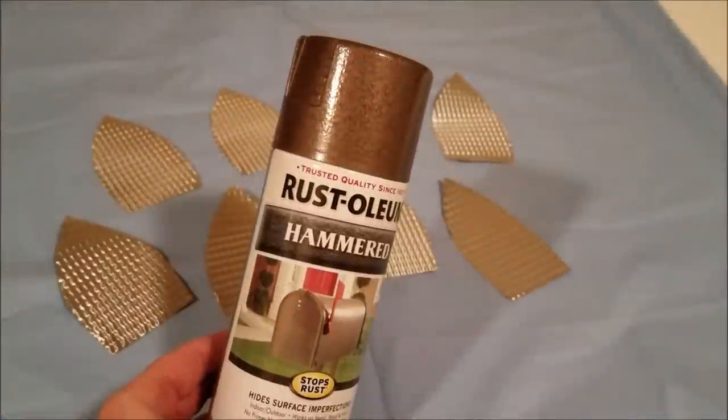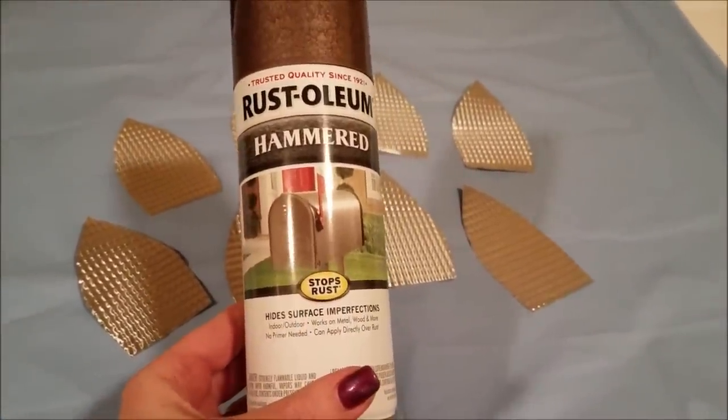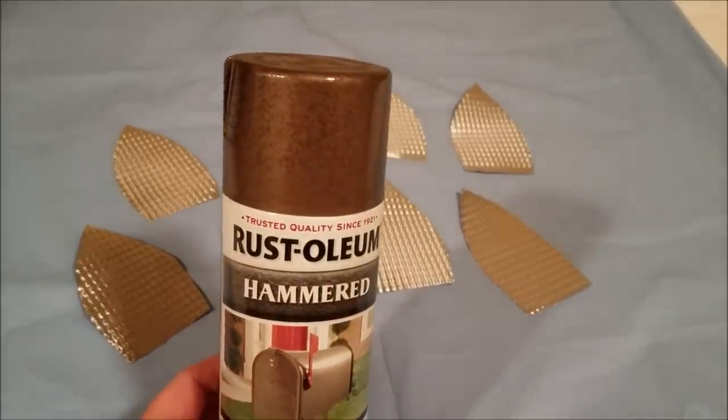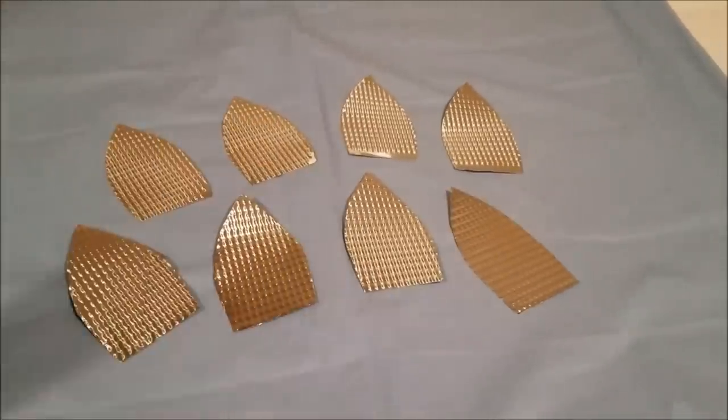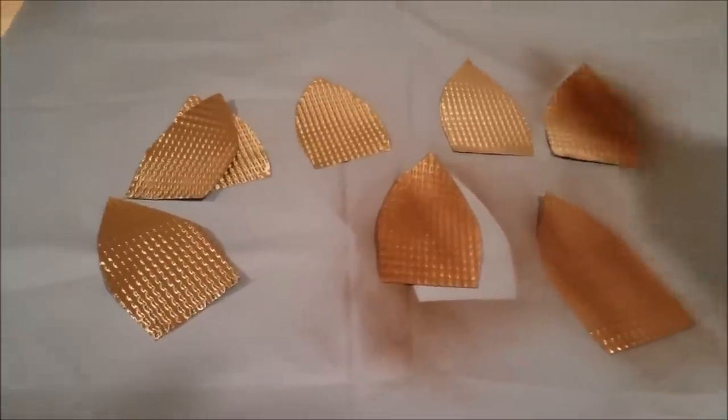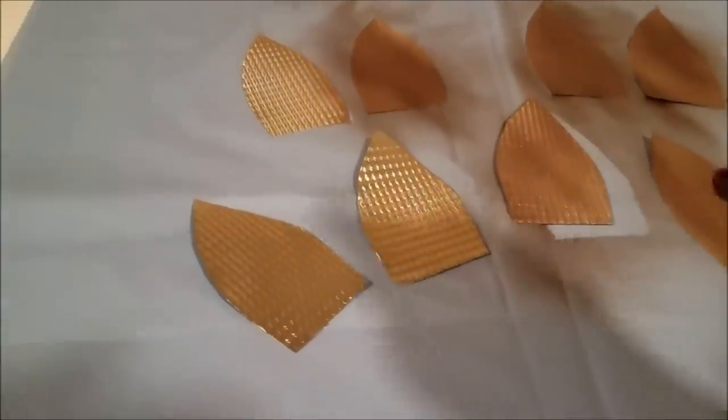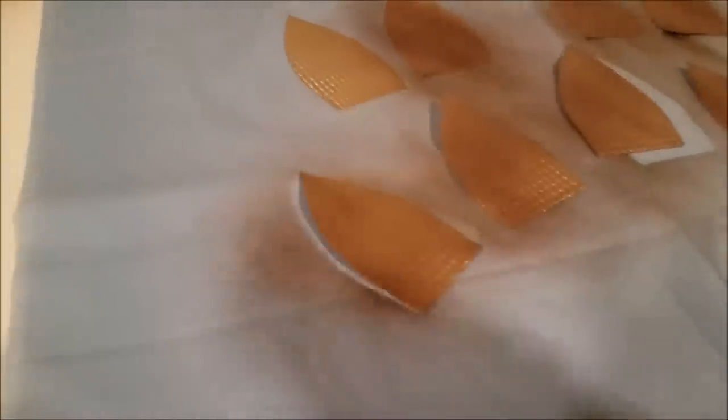For the center of the flower I'm going to use this Rust-Oleum hammered metallic paint. It's in an oil rubbed bronze finish. I'm just going to spray paint these and I'm not going to give them a real heavy coat, just kind of a light painting so that some of the silver shows through a little bit too. I'm going to spray paint both the front and the back of these because they are going to be curled over, so you will see both sides.